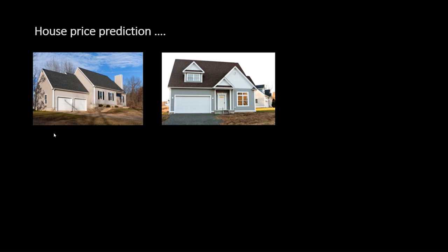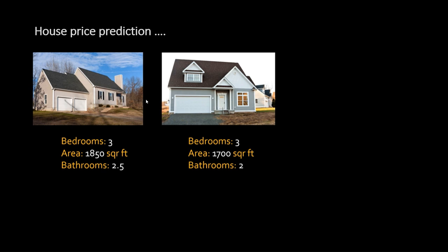Let's go to the solution to this problem with another scenario: house price prediction data. Here are two figures — let's figure out if these two homes are similar or not. You can say these two are similar by looking at attributes like number of bedrooms, area in square feet, and number of bathrooms. In terms of the values for these attributes or properties of the two images, you can say these two houses are similar.